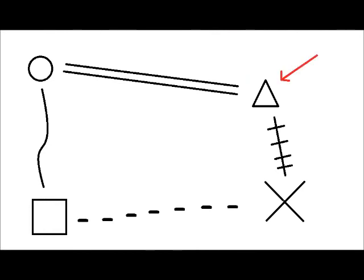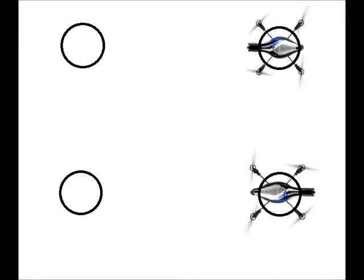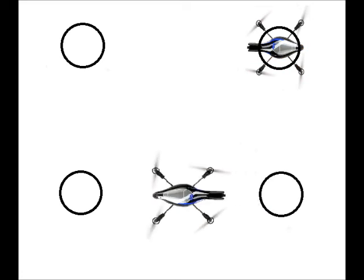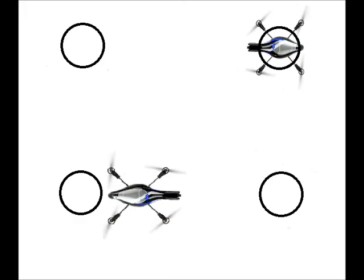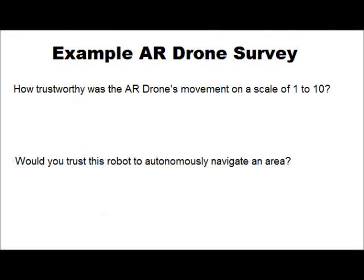The second portion of our project involves multiple drones. Upon the receipt of user input, the drone with the most efficient path will navigate to the desired position. Users will be surveyed on their personal trust in the robots at the end of the exercises.